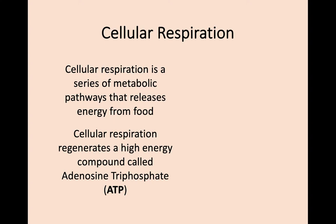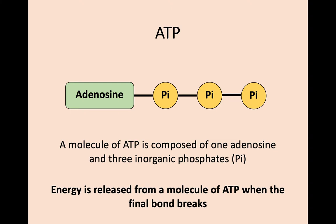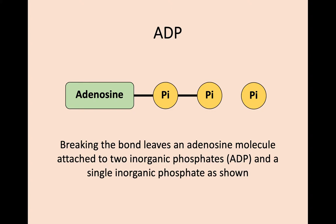More specifically, this energy is in the form of a high energy compound called adenosine triphosphate, or ATP. This high energy compound consists of an adenosine molecule with three inorganic phosphate molecules attached to it — hence the triphosphate. The important part is that if the terminal, or final, bond of these phosphates is broken, energy is released. Once this bond is broken and energy is released, we are left with a compound called adenosine diphosphate, or ADP, plus a single phosphate that has been separated off.